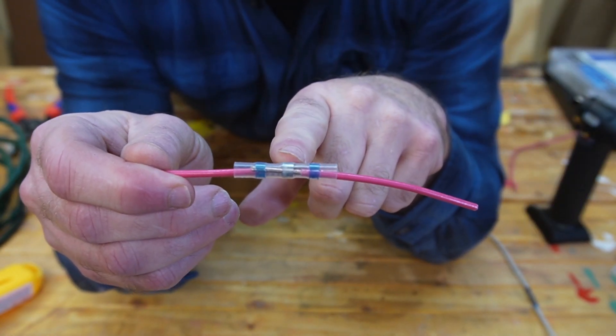There's a shrink tubing with a ring of solder in the middle of it. You put your conductors in both ends. You strip the ends and slide them in there with the stripped part inside that solder ring. Heat this up and that will melt the solder and make a joint and seal the ends of the wire.